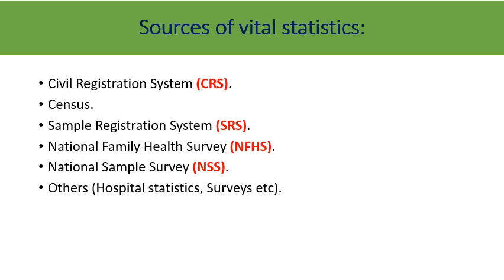Vital statistics involves births and deaths, so we can calculate the birth rate, death rate, and other rates. Any rate has a numerator and denominator. To calculate a birth rate or death rate, we need both. In a birth rate, the numerator is the number of live births in a particular population during a definite period, usually one year, and the denominator is the mid-year population during that particular period.